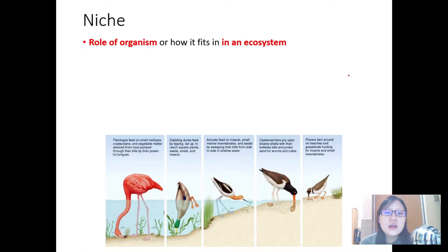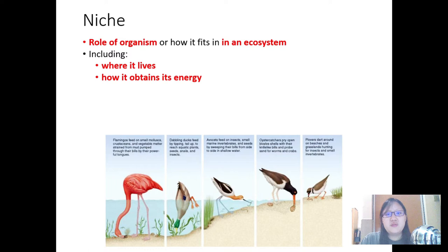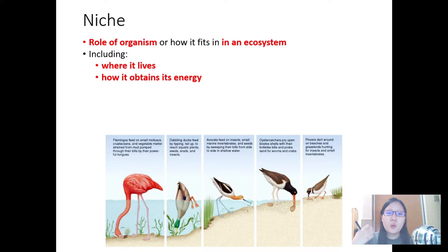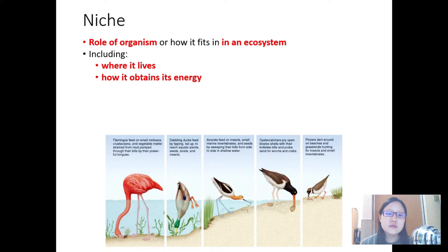This includes where it lives — specifically, is it on the tree, on top, in the middle, or the roots, or maybe it's under dead branches or dead leaves, maybe in the soil? Where in the world does it live? And how it obtains its energy — what is it feeding on, how does it obtain its nutrients? If it's a plant, there will be sunlight and water. If it's an animal, it's through eating different plants or eating other animals. So each organism has its own role, its own niche.